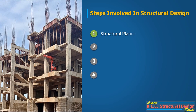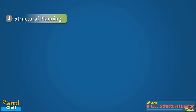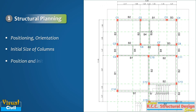The four steps are: first, structural planning; second, analysis of structure; third, design of structural members; and fourth, preparation of structural drawings. Structural planning includes positioning, orientation, and initial sizing of columns, as well as positioning and initial sizing of beams, and spanning of floor or roof slabs. It is always preferable to confirm the position, orientation, and initial sizes of columns and beams with the concerned architect or client before moving ahead.